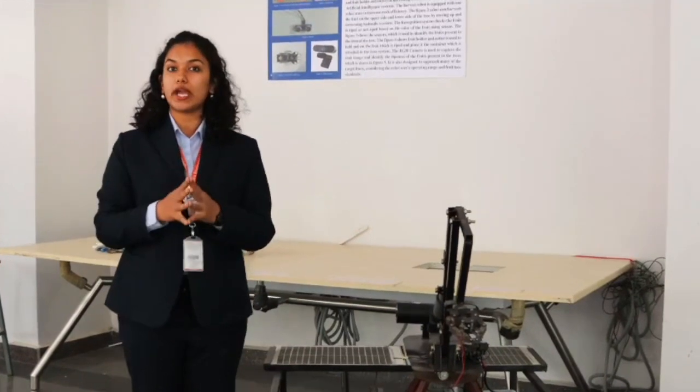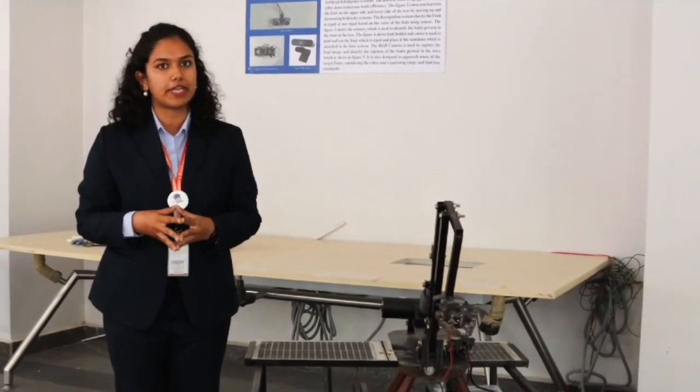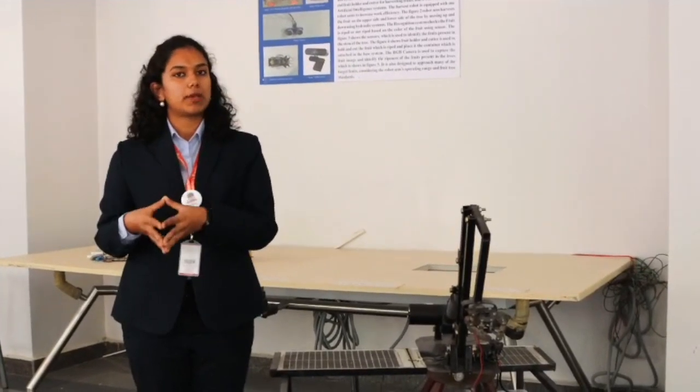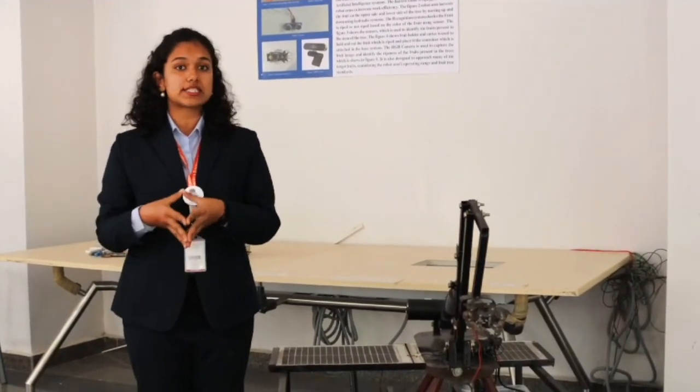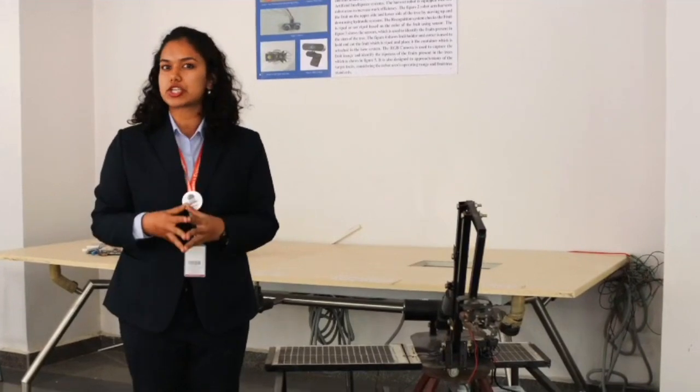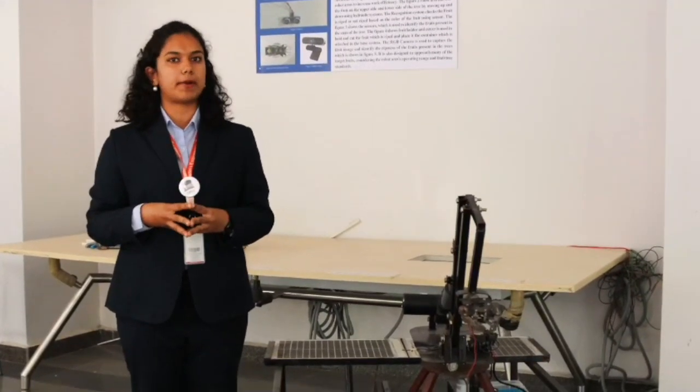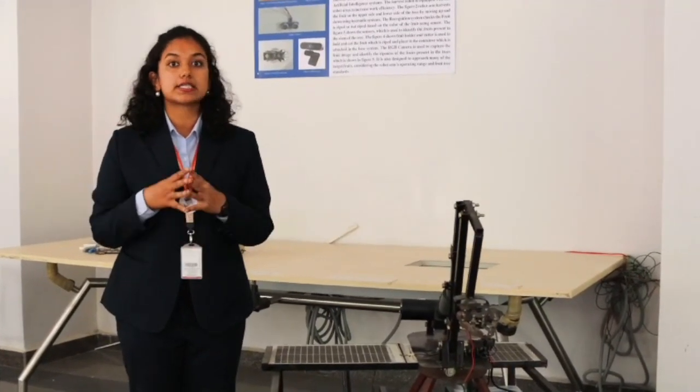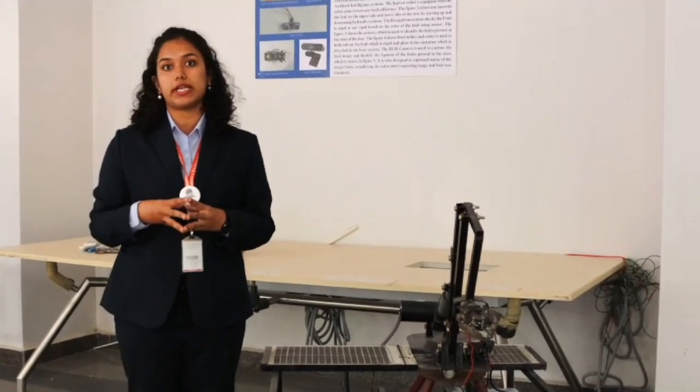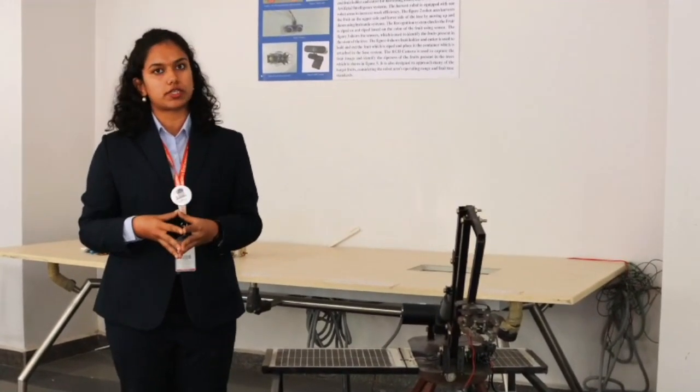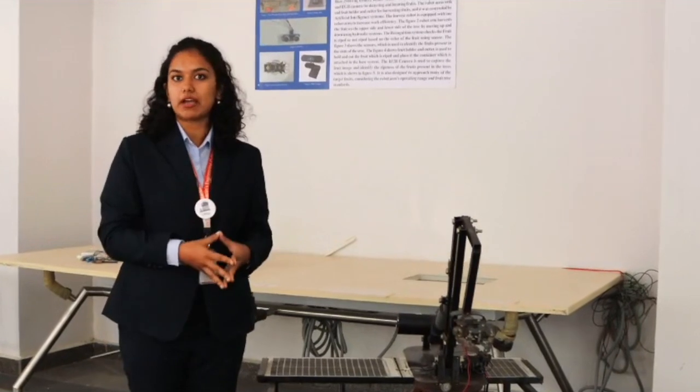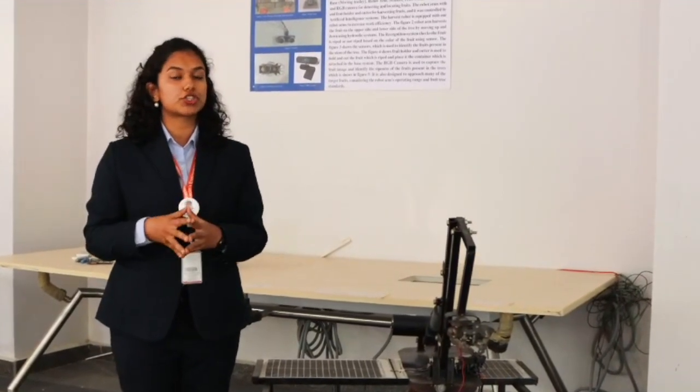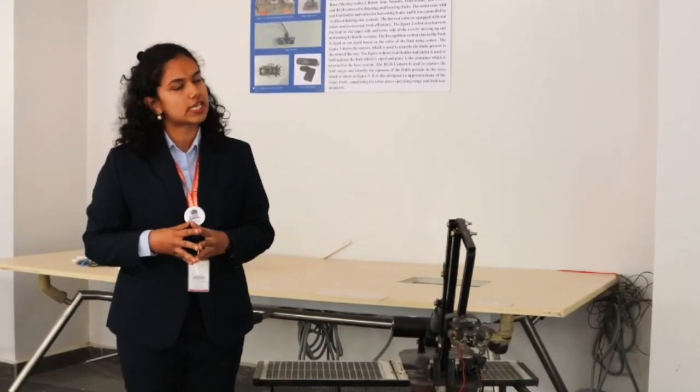The first being we are avoiding the artificial ripening of fruits. Usually farmers tend to pluck unripened mangoes and fasten the ripening process using dangerous chemicals such as calcium carbide. Calcium carbide is a carcinogen and has been known to lead humans to many health disorders. Keeping that in mind, we have introduced this robot which can ensure that artificial ripening of fruits does not take place.